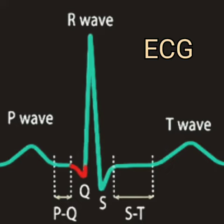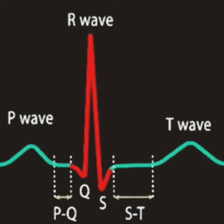The Q wave is a small negative deflection of height less than 0.2 mV and duration less than 0.04 second. The QRS complex is due to ventricular depolarization.